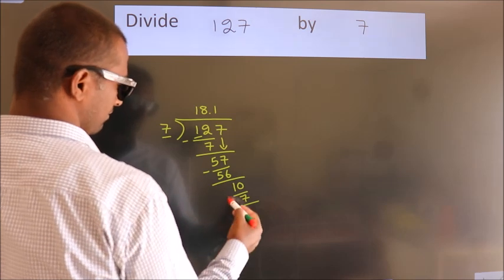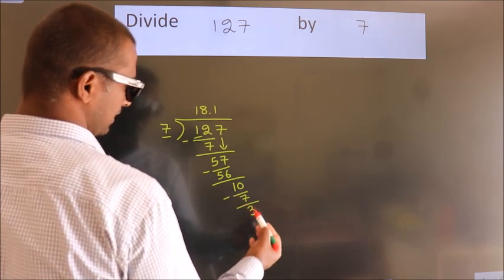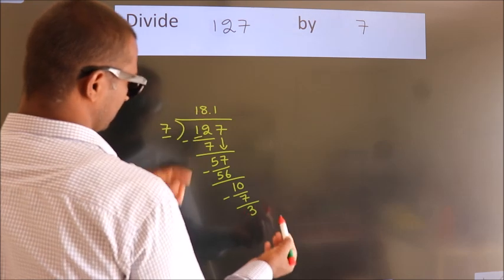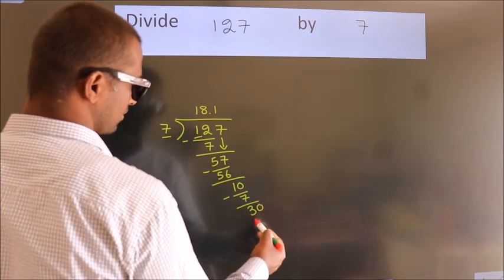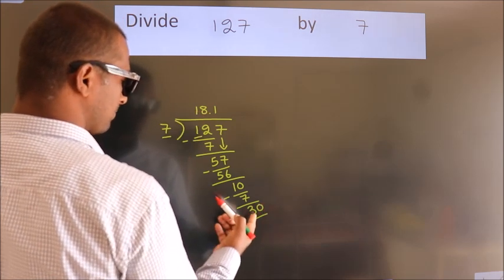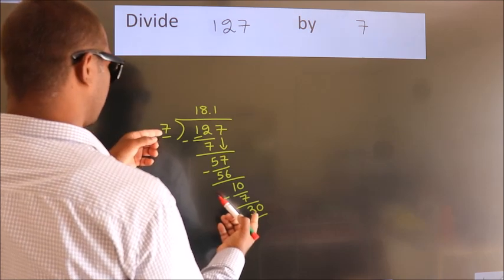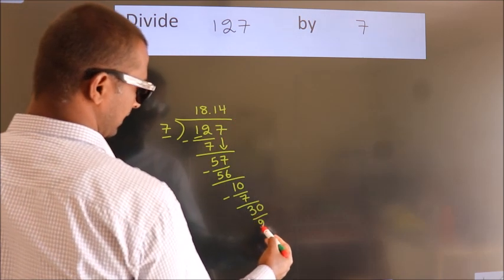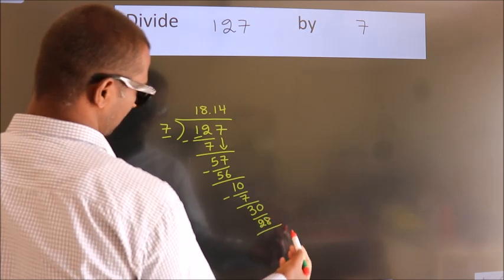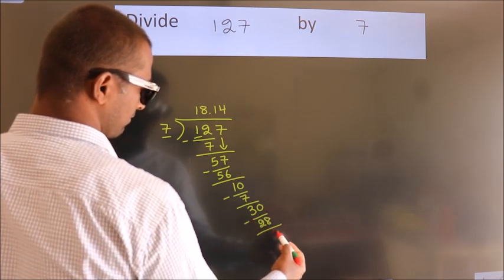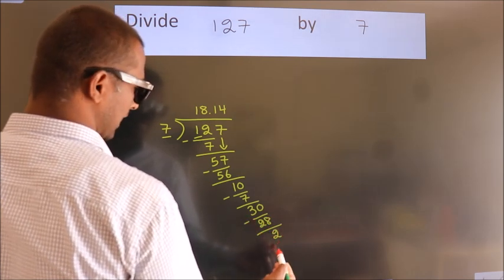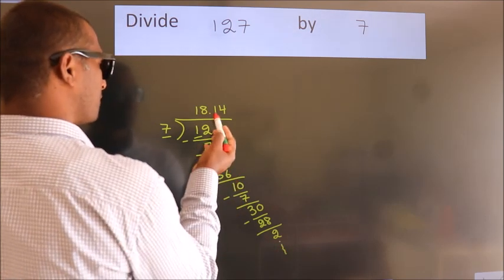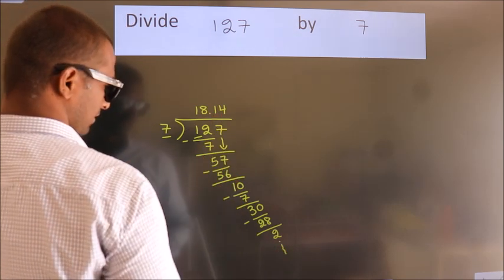Now we subtract. We get 3. After this, we already have the decimal, so directly take 0. So 30. A number close to 30 in the 7 table is 7 times 4 equals 28. Now we subtract. We get 2, and the division continues. So it is enough if we do up to two decimal places.